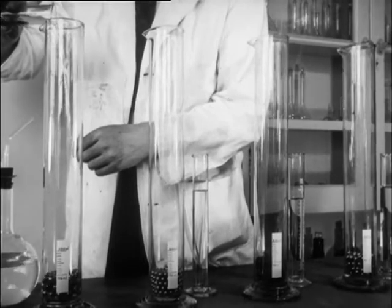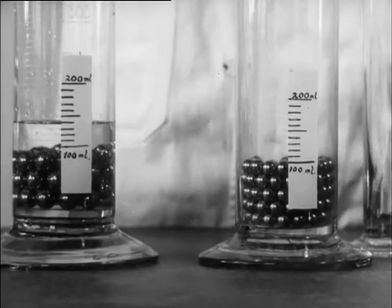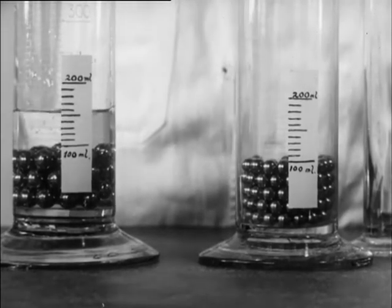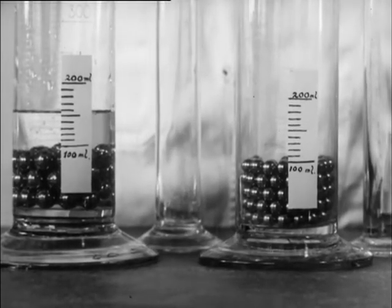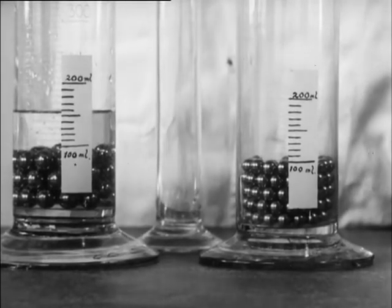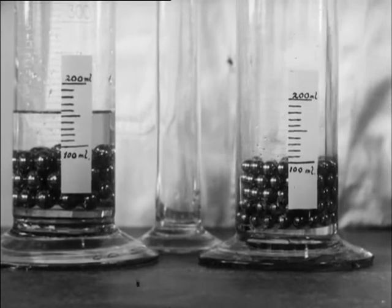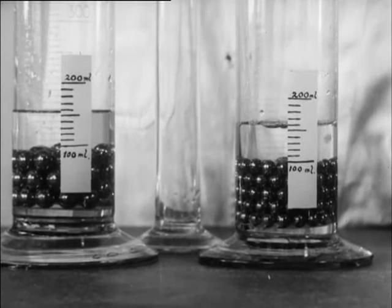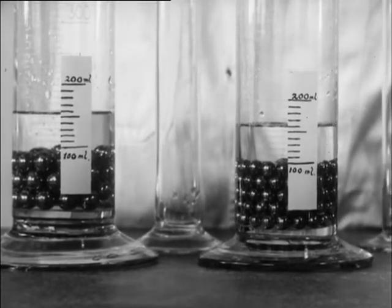If large ball bearings fill a cylinder to the 100 mark and an equal volume of water is added, the water is displaced to the 155 mark, showing that the ball bearings occupy 55 percent of the 100 cc volume. The same displacement results from smaller but also uniform sized ball bearings. The narrowness of the cylinder cuts down the figure demanded by theory.